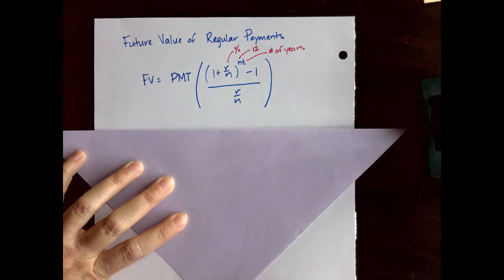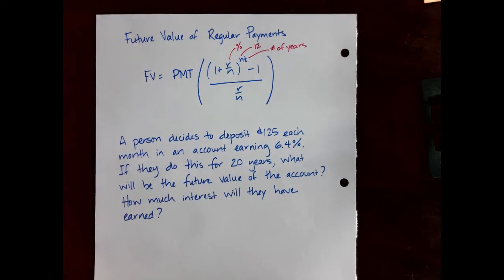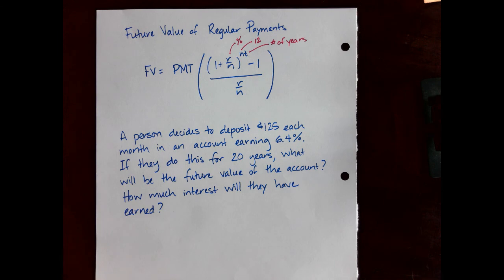So let's see how this would work. Let's say that we have this scenario where a person decides to deposit $125 each month in an account that earns 6.4 percent and that's never going to fluctuate. If they do this for 20 years what will be the future value of the account and how much interest will they have earned?